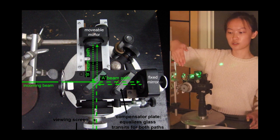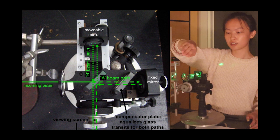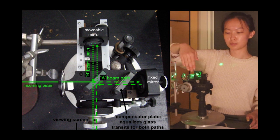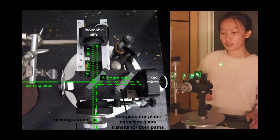Path A first passes through the beam splitter, bounces off a mirror, and then bounces off the beam splitter again and goes to the screen. Path B bounces off the beam splitter first, bounces off the mirror, and then goes through the beam splitter hitting the screen.